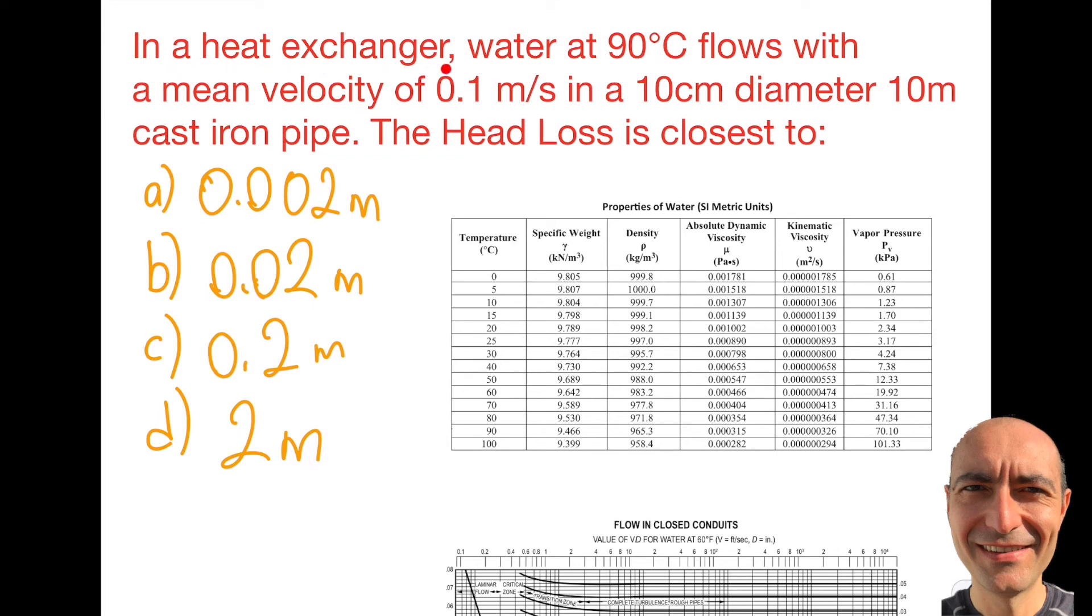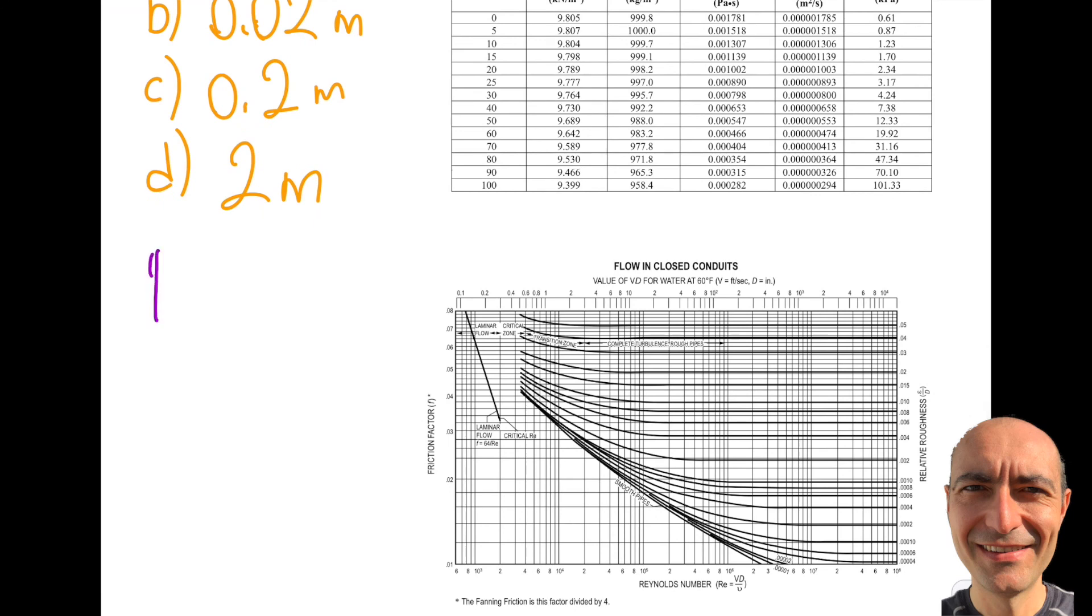I have a heat exchanger with water at 90 degrees C, and the mean velocity is given as 0.1 meter per second. The diameter of the pipe is 10 centimeters, which is 0.1 meters, and the length of the pipe is 10 meters. I was given the pipe is made out of cast iron. My goal is to find the head loss, and you can see the choices over here. It's pretty much looking at the order of magnitude.